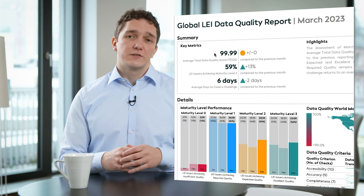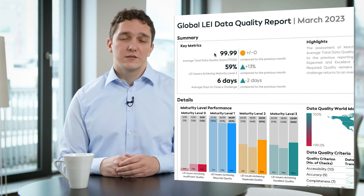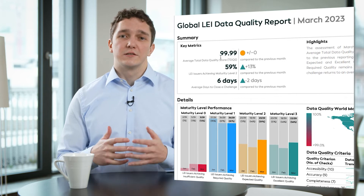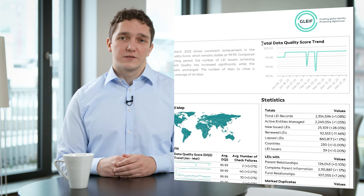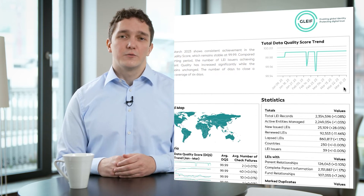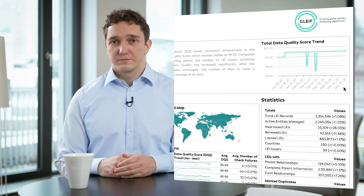The total data quality score, on the other hand, aims to represent the data quality in one single KPI. Here we consider the ratio between passed and failed data quality checks, whereas weights are applied for the different maturity levels. Both KPIs are tracked on a daily basis and give comprehensible insights into the performance of all LEI issuers.